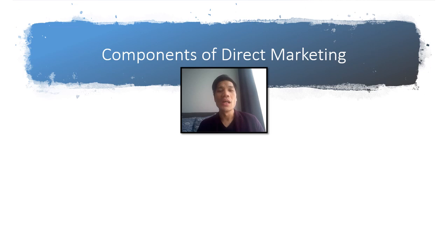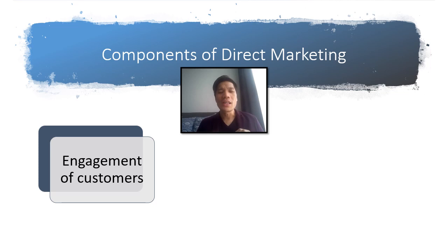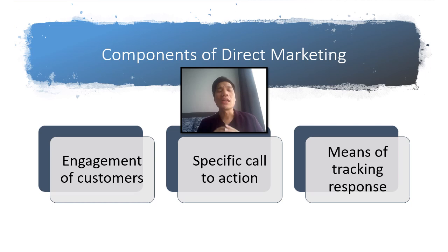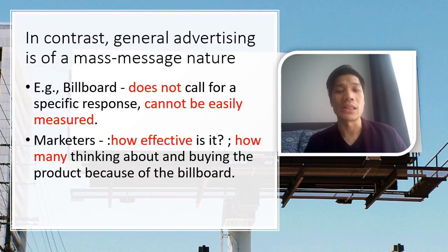So what are the components of direct marketing? Firstly, you need engagement of customers — a pure engagement of just a pre-selected number of customers. Then you have to get them to take a specific call to action, and there must be a means of tracking the response from those pre-selected customers.